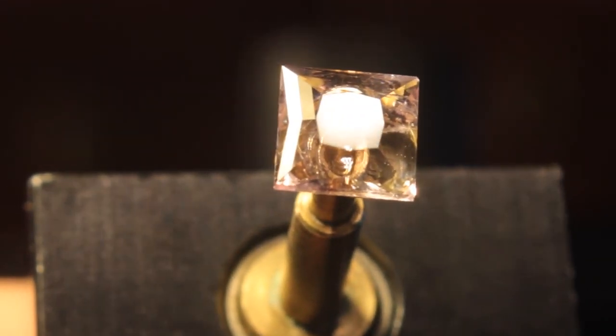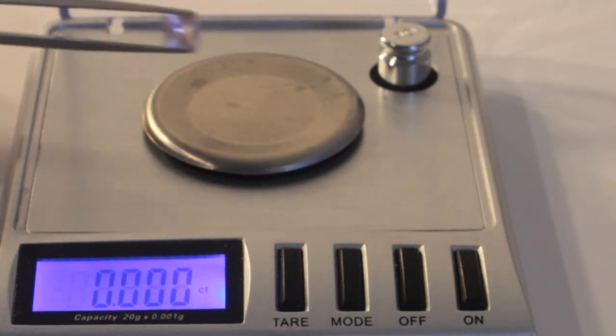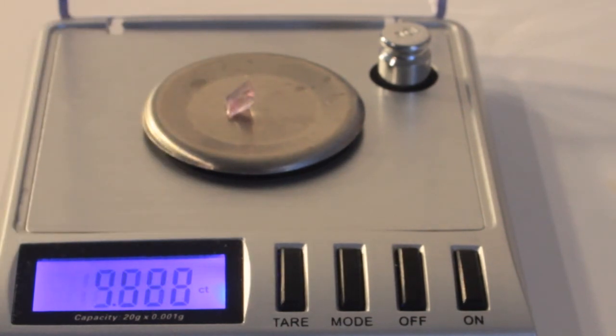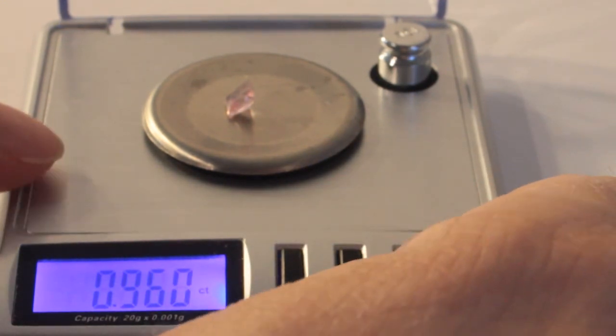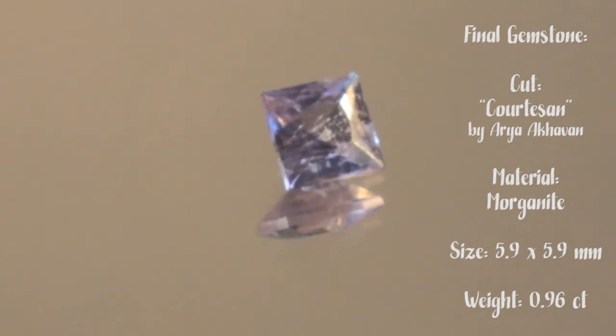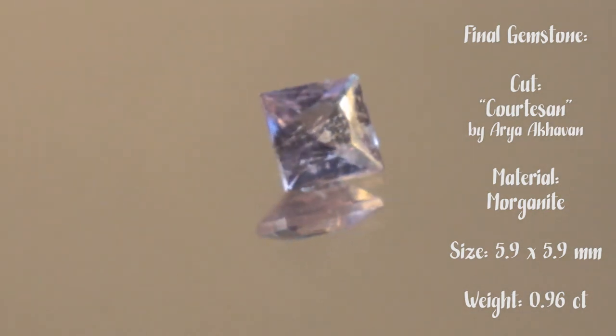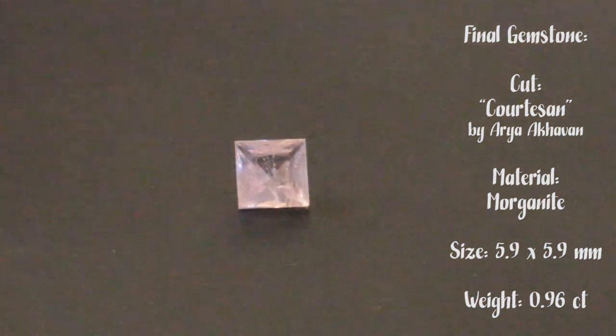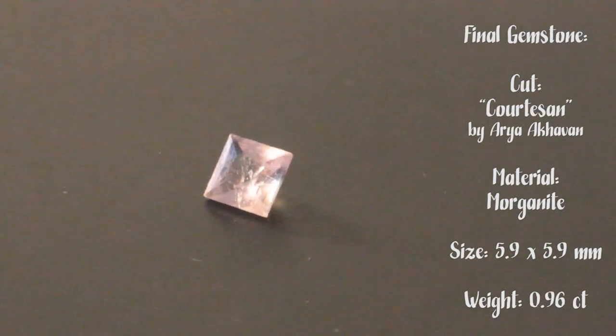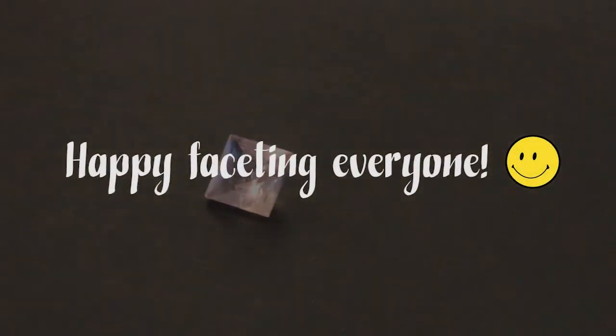Today I cut a vivid colored Morganite into a square design called Courtesan. It's difficult to find Morganite in this shade of pink, so I had to accept that the gemstone had some inclusions. The design is not a difficult design, and in my opinion, any cutter could cut this design without difficulty, even a brand new cutter. Thanks again for the design, Arya. For a good percentage of gemstones that I cut, probably around 15-20%, I do use a square design, but I haven't found my go-to favorite square design yet. Please help me out and let me know in the comments what your favorite square design is, and also let me know what you think of this gemstone and the design. And as always, happy faceting, everyone.